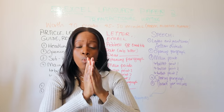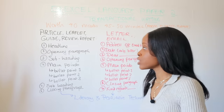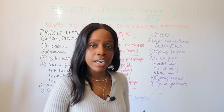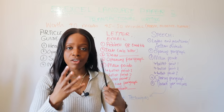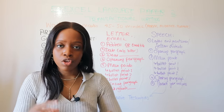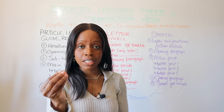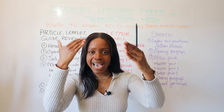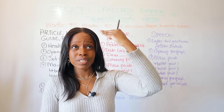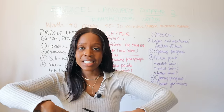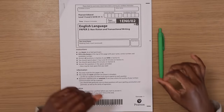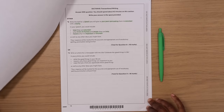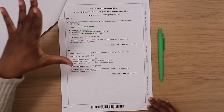Hopefully that makes it easy to understand what the requirements of transactional writing are. It's literally as simple as just following these forms within whatever question you get. Remember, you get a choice of two questions — pick one, don't do both. Now that you have an understanding of transactional writing, I'm going to show you a worked example using the 2021 exam question.